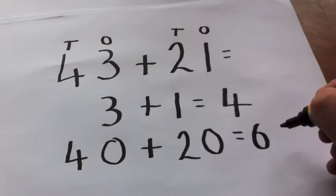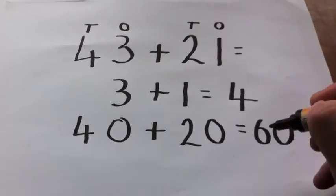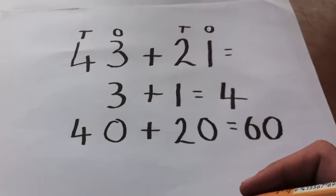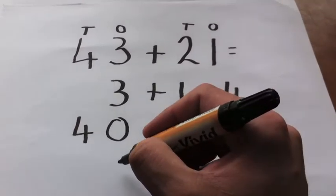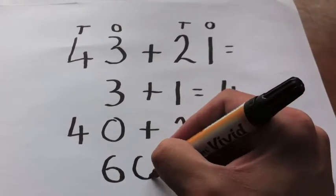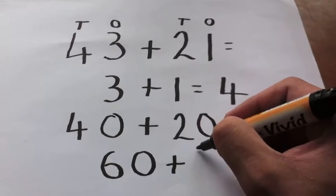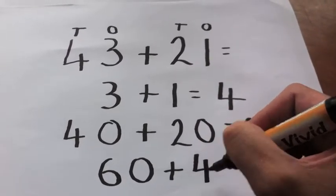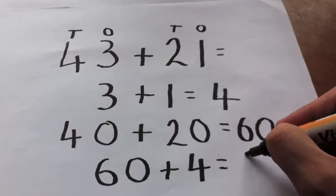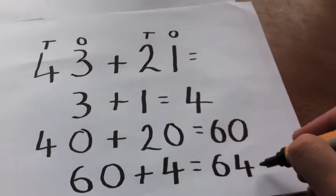And then, basically all you have to do to finish off is add those two numbers you just split, so 60 plus 40, sorry, plus 4, 64, done.